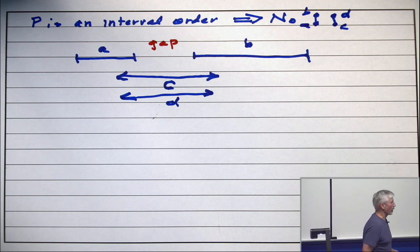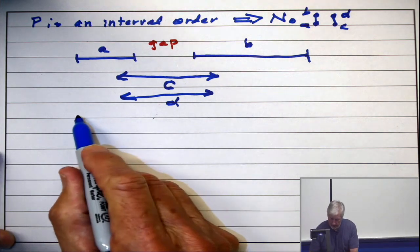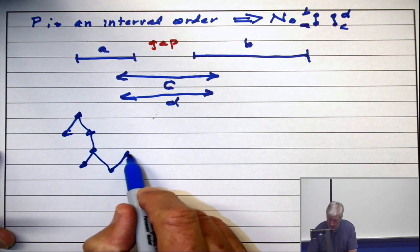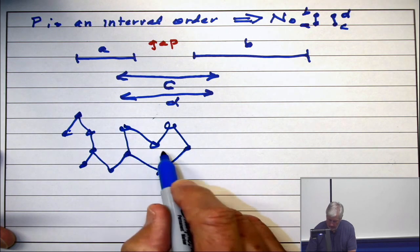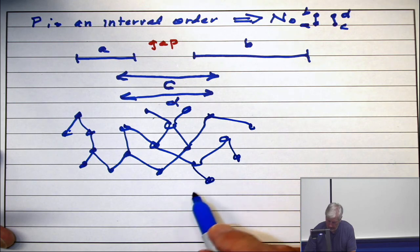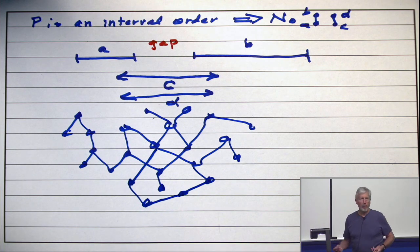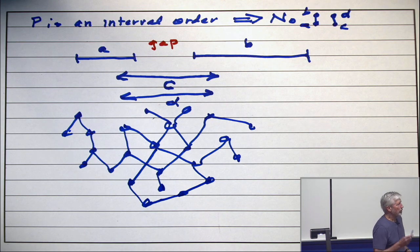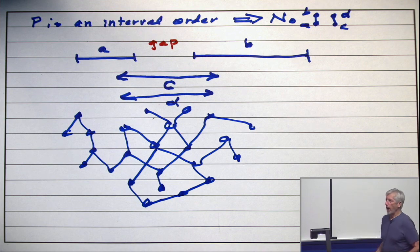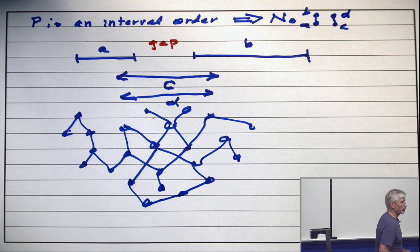If a poset is an interval order, it does not contain a 2 plus 2. So, by inspection, if I draw this poset and ask you, is it an interval order? Do you have to waste much time answering that? Do you sit around for 20 minutes trying to come up with intervals for all these points? No, you take about 10 seconds, and you find 4 points in this that form a 2 plus 2. Now, look at it and find in your mind 4 points in that poset that form a 2 plus 2. There's lots and lots of choices.